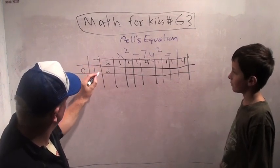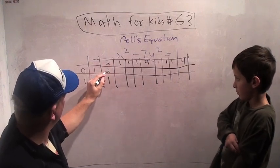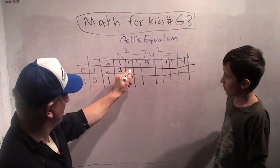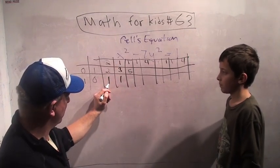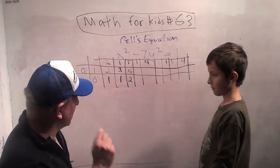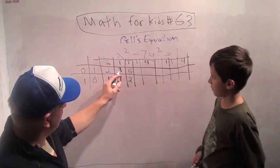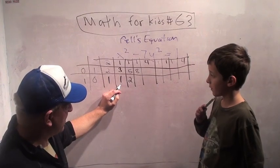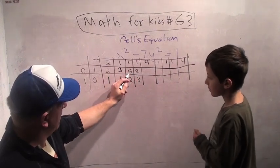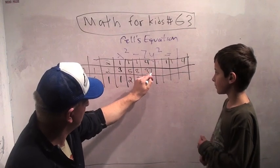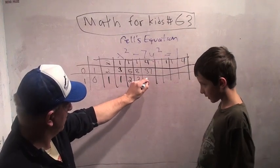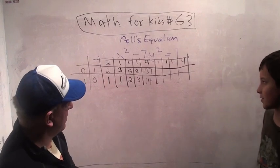2 times 1 plus 0 is 2. 2 times 0 plus 1 is 1. 1 times 2 plus 1 is 3. 1 times 1 plus 0 is 1. 1 times 3 plus 2 is 5. 1 times 1 plus 1 is 2. This is starting to look sort of like the Fibonacci. It does sort of look like the Fibonacci, but that pattern will break in a minute. 1 times 5 plus 3 is 8. 1 times 2 plus 1 is 3. Still looking Fibonacci.